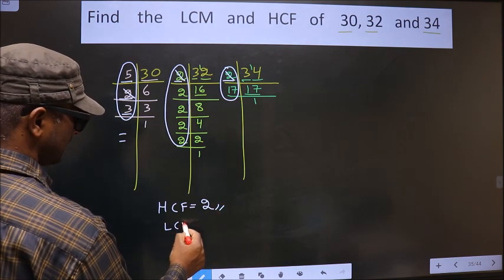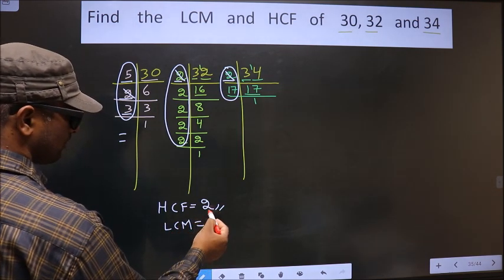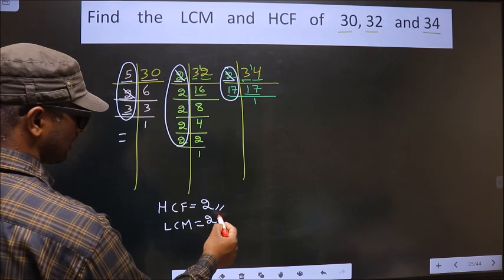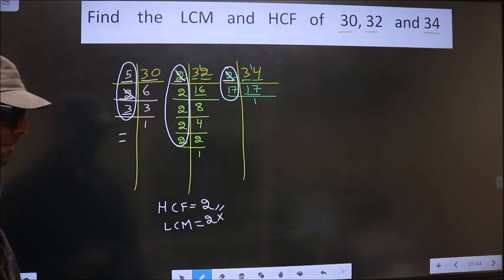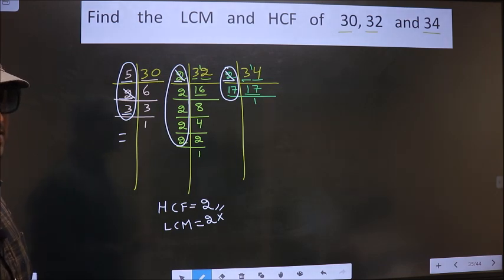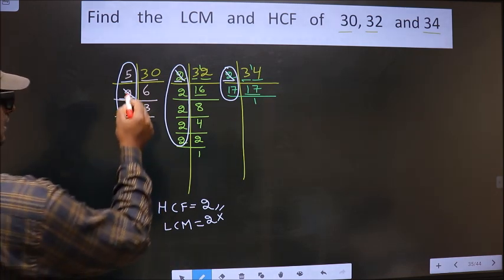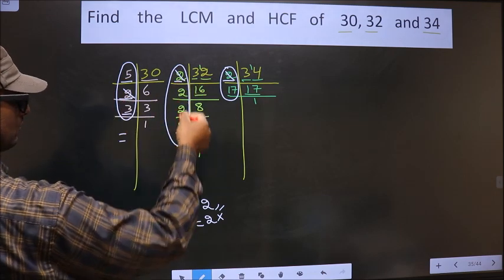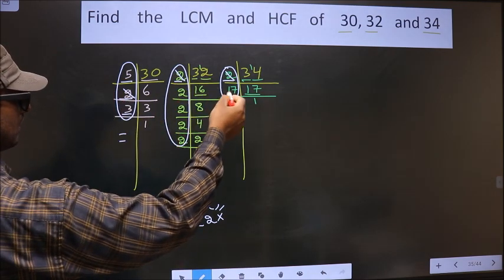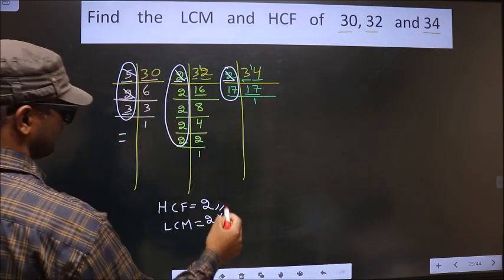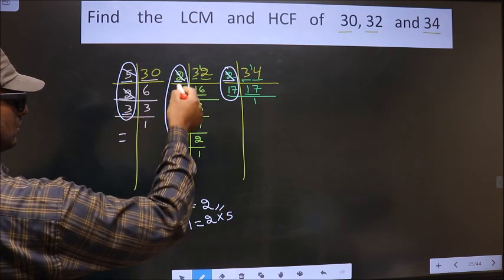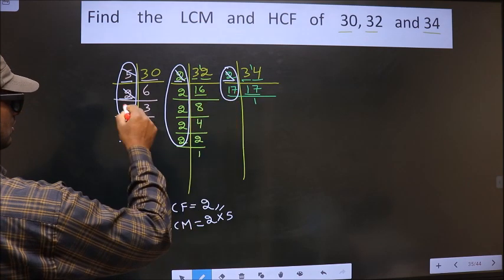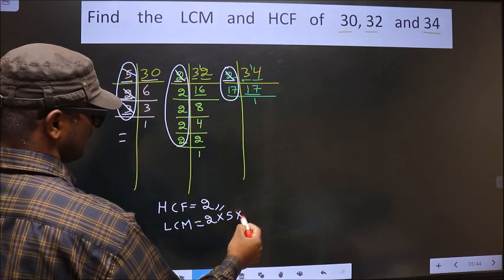Now to get LCM. Whatever HCF you have got, to that we should multiply by certain numbers. And how do we decide those numbers? See. Here 5 is not cut. Do we have 5 here? No. Do we have 5 here? No. So you cut 5 right here. Next uncut number is 3. Do we have 3 here? No. So you cut 3 right here.